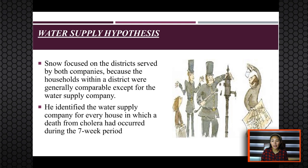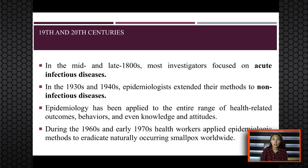Now we move on to the 19th and 20th century. In the mid and late 1800s, epidemiologists started to use the epidemiological methods established by John Snow in investigating disease occurrence, with most investigations focusing on acute infectious diseases. In the 1930s and 1940s, epidemiologists extended their investigations to include non-infectious diseases.